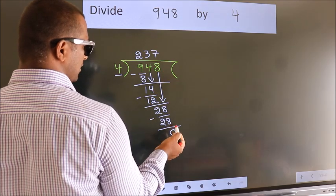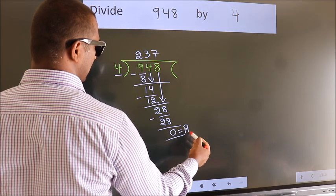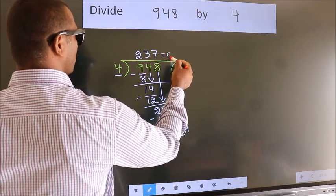No more numbers to bring it down. So we stop here. This is our remainder. This is our quotient.